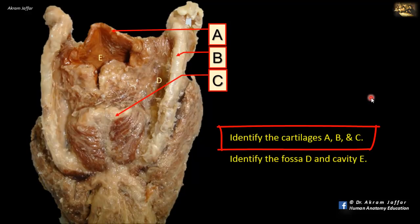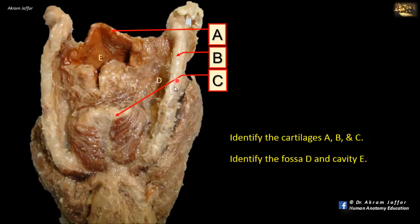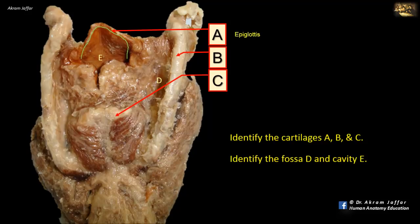Identify the cartilages A, B, and C. This is a posterior view of the larynx. You can see the posterior aspect of the thyroid cartilage with the superior and inferior horns. A is the leaf-shaped cartilage of the larynx — the epiglottis. B is the posterior aspect of the thyroid cartilage with its superior horn, and the inferior horn articulates with the cricoid cartilage.